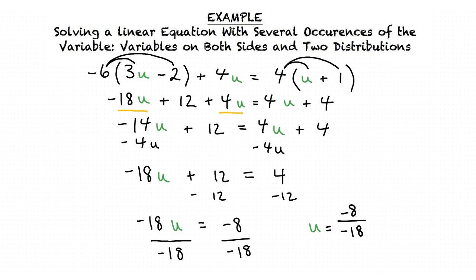We can simplify by canceling our negative signs and then dividing the numerator and the denominator by 2. Our final answer after simplifying is u equals 4 ninths.